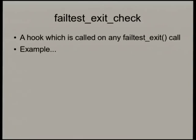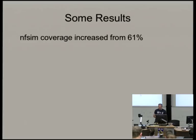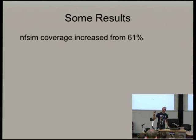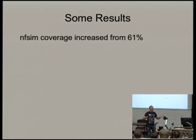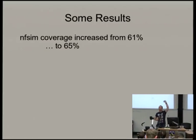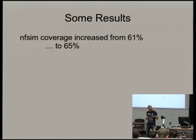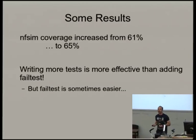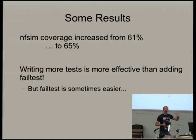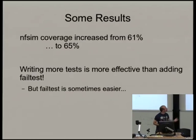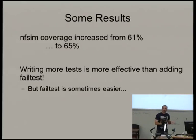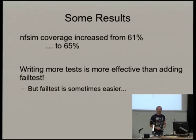Some results: in nf-sim our test coverage was 61% using simple gcov line counting. When we implemented fail_test with forking, we went to 65%. The thing to take away is that writing more tests is almost certainly more effective than adding fail_test, but fail_test is easy and it will get that last few percent, which may well be important. First get your coverage way above 61%, then tack fail_test on at the end — it gives you that little boost when you get tired of writing tests.